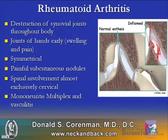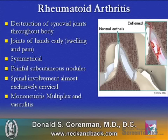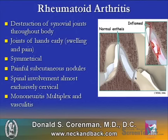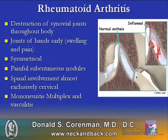Rheumatoid arthritis is noted for the destruction of synovial joints throughout the body. You develop enthesopathy, as noted on the right picture, of an inflamed joint with worn cartilage versus a normal joint. The rheumatoid arthritis problem is typically symmetrical. There are painful subcutaneous nodules, and spinal involvement is almost always exclusively cervical — very uncommon to have the lumbar spine involved.